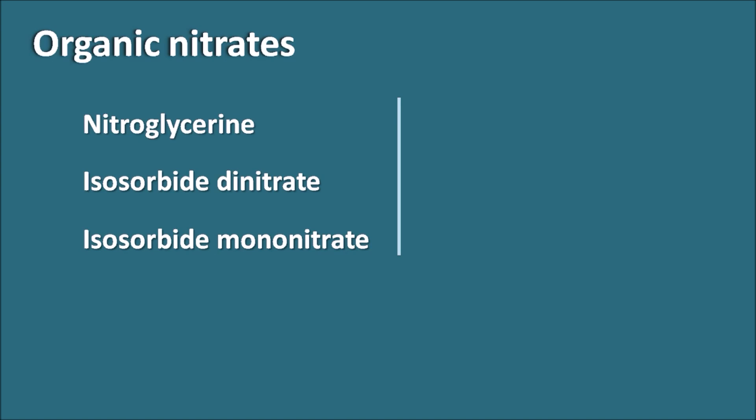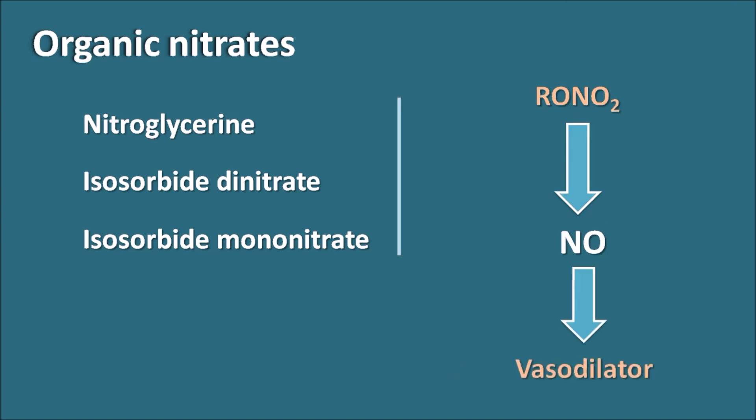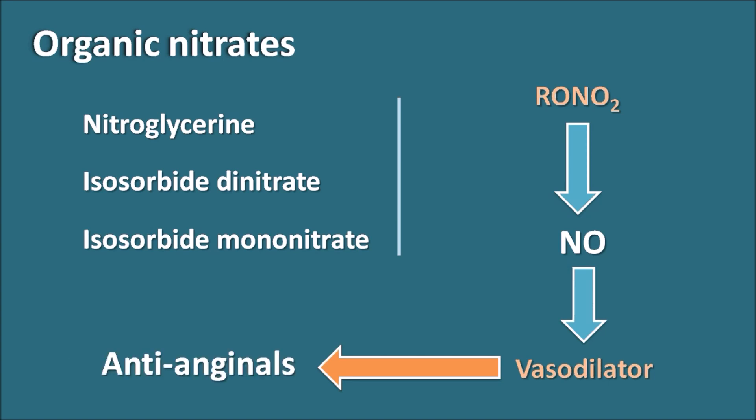Organic nitrates are generally expressed by the molecular formula RONO₂. When administered into the body, they can release nitric oxide by enzymatic as well as non-enzymatic processes. This nitric oxide acts as a potential mediator which produces vasodilatation of the vascular smooth muscle. In this way, organic nitrates can increase blood supply and coronary blood supply, so they are used in the treatment of angina as anti-anginals.